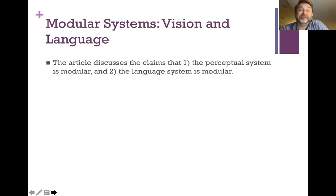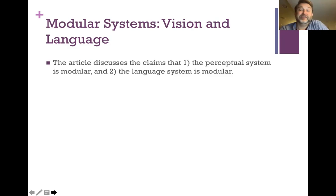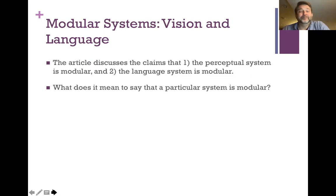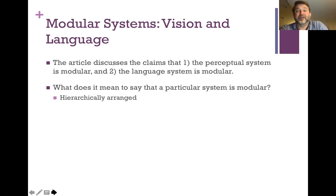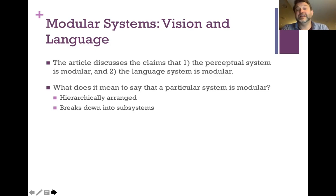The article discusses the claim that the perceptual system is modular and also that the language system is modular. What does it mean to say that a particular system is modular? It means it is realized by simple subsystems that work according to particular defined algorithms that we don't have access to. These are hierarchically arranged systems of modules, and we can decompose vision or language into a variety of different subsystems that exhibit the modular characteristics described previously.